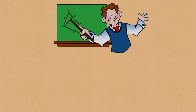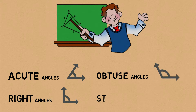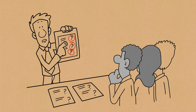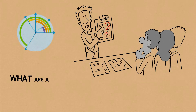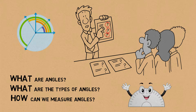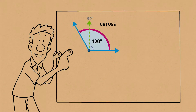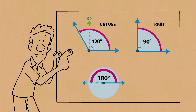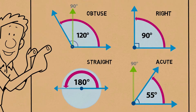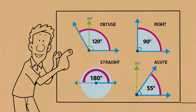In this video, we're going to be learning about acute angles, right angles, obtuse angles, and straight angles. We will be covering topics such as what are angles, what are the types of angles, and how can we measure angles using a protractor. What is an obtuse angle? What is the right angle? What is a straight angle? What is an acute angle? And we would also be learning about what is the degree sign that we use when we represent angles.